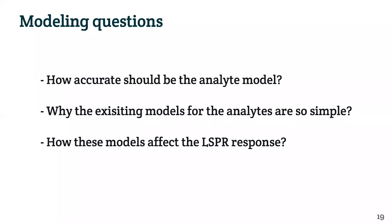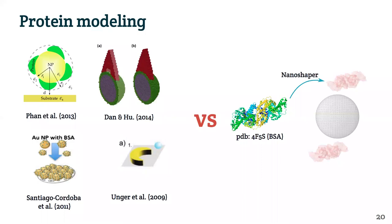The next question was: what are the implications of the computational model we have? How accurate should the analyte model be? Do we really need to use the full crystal structure representation, or can we use simpler models? We know there are some existing models that are very simple, and we want to understand what the consequences are of using these models in the LSPR response. In the literature, we found few works that do computational analysis of this type of problem, and in all of them the representation of the protein around the nanoparticle tends to be simple.